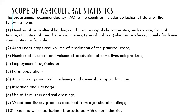Point five is farm population, which relates to employment — how many people are held working on the farm, which comes down to efficiency of productivity. Point six covers agricultural power and machinery being used, as well as general transport facilities. Point seven is irrigation and drainage — what systems have been employed affects our yields. Point eight is use of fertilizers and soil dressings — what types are being used, how they are being purchased and supplied to farmers, as this is a major factor in production.